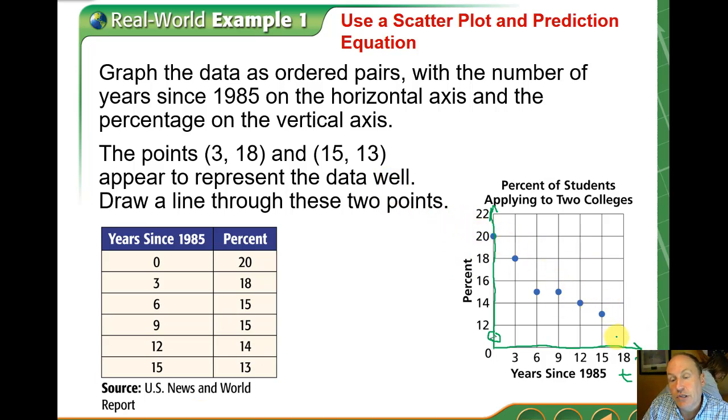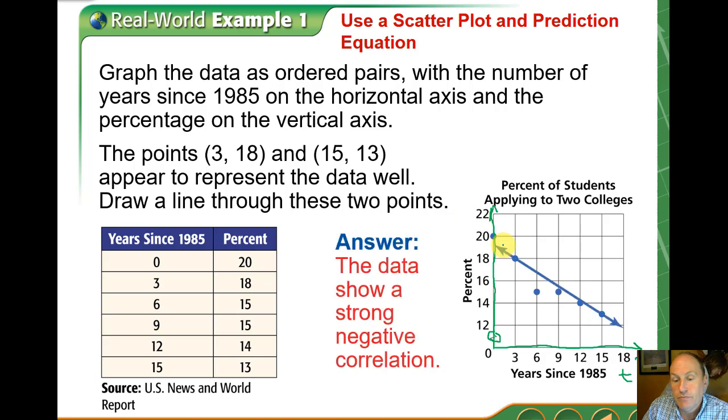Clearly this data is sloping downward to the right, and we're going to try to find a line of best fit. Here's a line that pretty well represents the data. Notice that it does pass through two points.